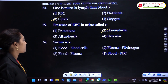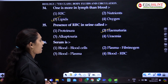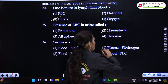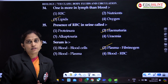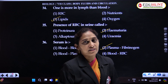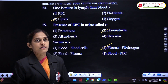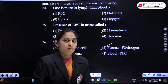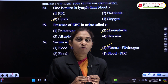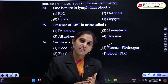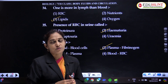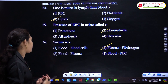Serum is: blood minus blood cells, plasma minus fibrinogen, blood minus plasma, or blood minus RBC. The correct answer is option 2 — plasma minus fibrinogen. Plasma without clotting factors or clotting proteins is known as serum. After a wound seals, the transparent water-like liquid that oozes out is serum — nothing but plasma without clotting factors or clotting proteins.